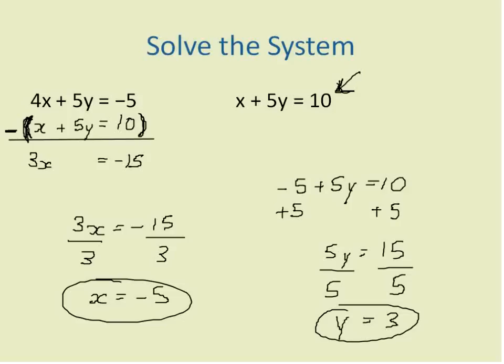So the solution for this system is negative 5, positive 3. So that's the ordered pair or the point where these two lines meet. And that's how we solve systems of linear equations using the combination method, addition or subtraction.